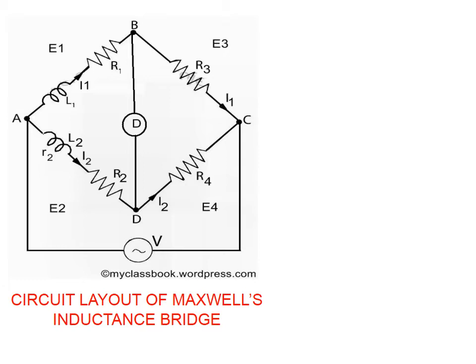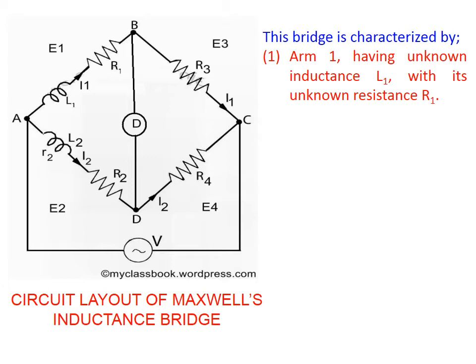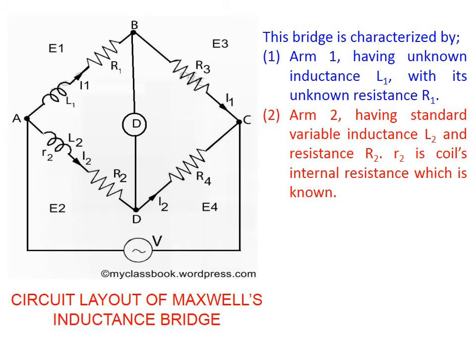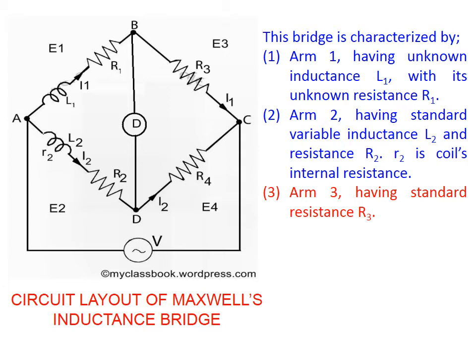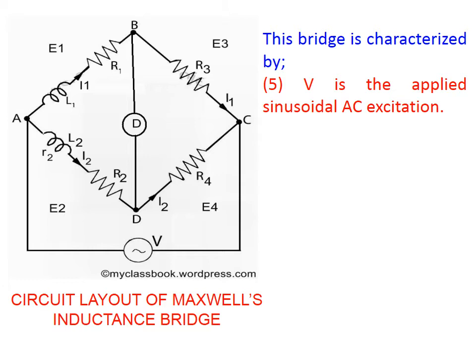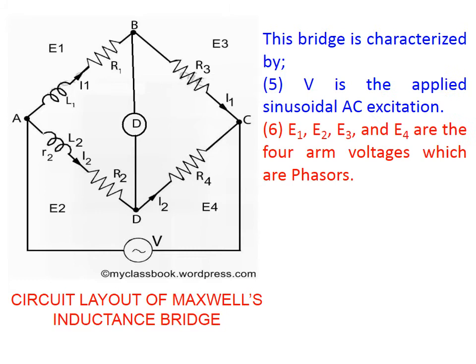Let us take the circuit layout of Maxwell's Inductance Bridge. This bridge circuit is characterized by arm 1 having unknown inductance L1 with its unknown resistance R1; arm 2 having standard variable inductance L2 and resistance R2, where lowercase r2 is the coil's internal resistance which is known; arm 3 having a standard non-inductive resistance R3; and arm 4 having a standard non-inductive resistance R4. V is the applied sinusoidal excitation of a known frequency. E1, E2, E3, and E4 are the four arm voltages, which are phasors.